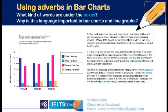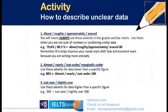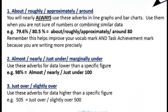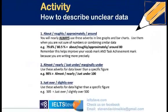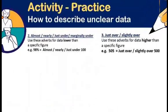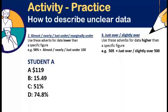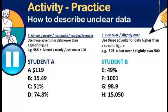This language is very important in bar charts and line graphs. Here's another activity: we've got 'about,' 'roughly,' 'approximately,' 'around,' which we use all the time, and then words for just below a number — for example, 98 would be 'nearly 100' — or slightly above, like 'just over' or 'slightly over 500.' We're going to focus on categories two and three, since 'roughly' and 'approximately' are straightforward — students sometimes make mistakes with the other two. Split into student A and student B, describe those numbers, and if you'd like further practice, make up numbers, write them down, say them, and compare with your partner.